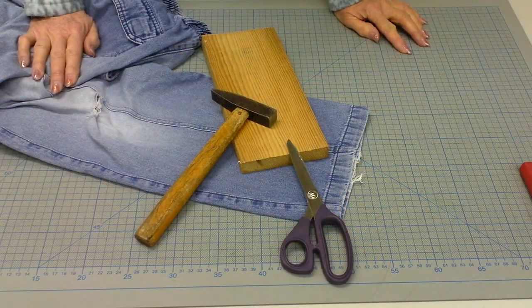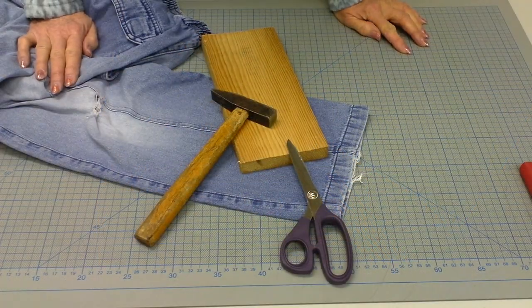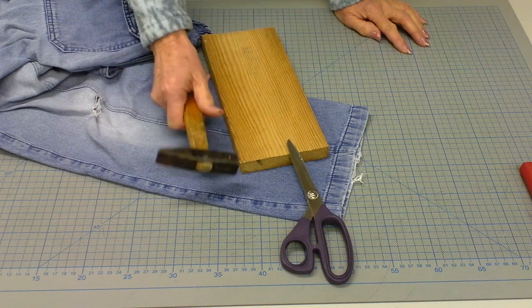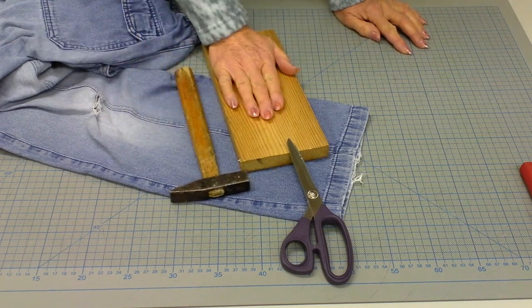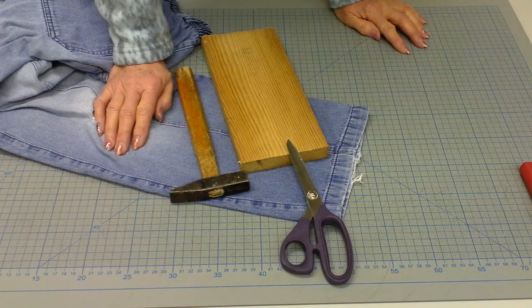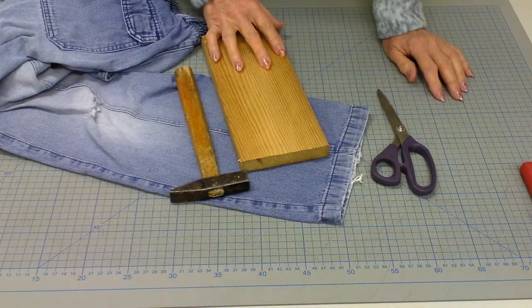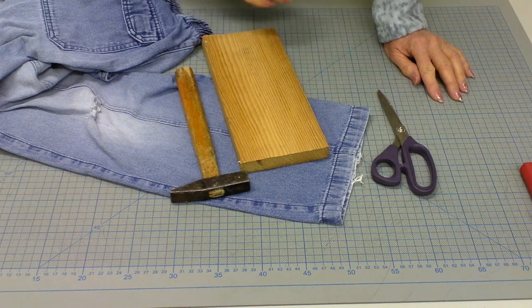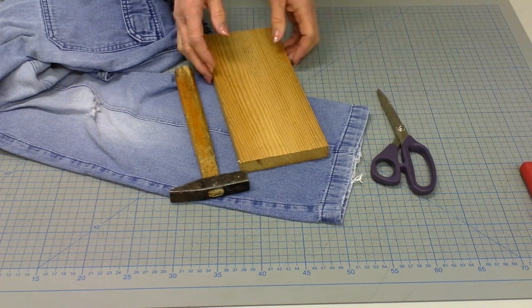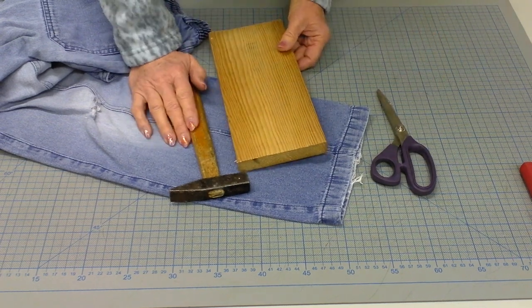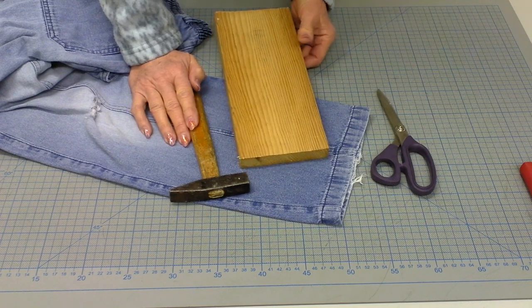When I prepare myself to work with jeans material, I in general have some tools lying ready there for me. This will be my hammer, a solid piece of wood, my good scissors for sewing, and already I prepare my sewing machine with the right threads, the right color, so everything is prepared and I can get started.